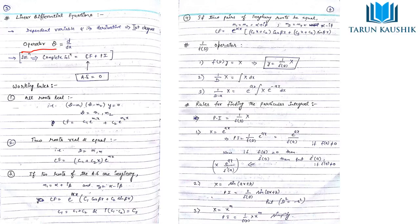The operator D is counted as d/dx. The complete solution is the complementary function (CF) plus particular integration (PI). To calculate the complementary function, we set the auxiliary equation equal to zero, then solve. For the particular integration, we will see the procedure through examples.